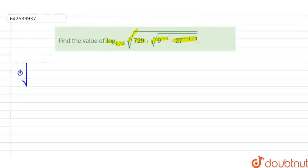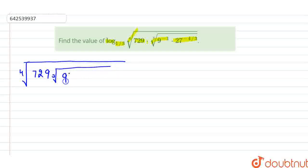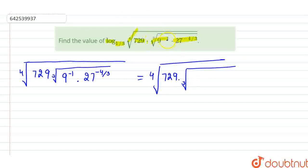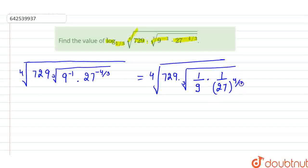The expression inside the log is: 4th root of 729, multiplied by cube root of 9 raised to the power minus 1, multiplied by 27 raised to the power minus 4 by 3. Now, the cube root of 9 raised to the power minus 1 can be written as 1 upon 9, and 27 raised to the power minus 4 by 3 becomes 1 upon 27 raised to the power 4 by 3. And 27 can be written as 3 cubed.